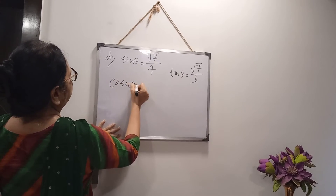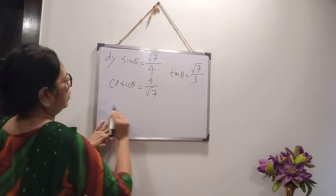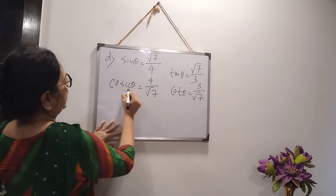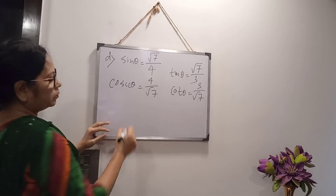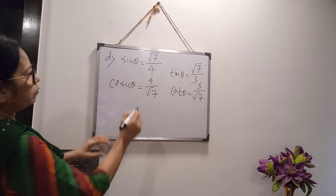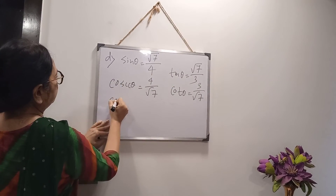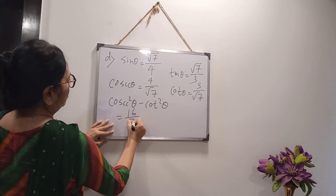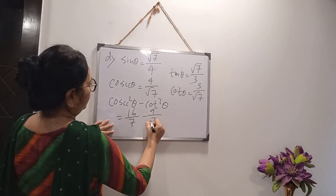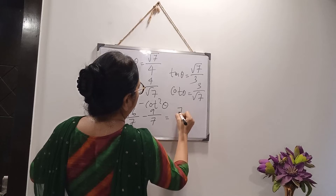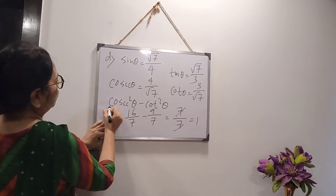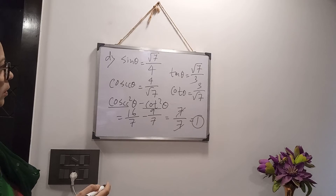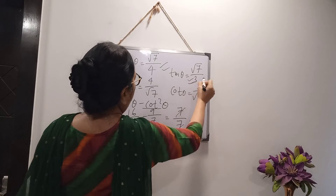Cosecθ = 4/√7, and cotθ is the inverse of tanθ = 3/√7. Now check cosec²θ - cot²θ: cosec²θ = 16/7, cot²θ = 9/7. So 16/7 - 9/7 = 7/7 = 1. The formula cosec²θ - cot²θ = 1 is satisfied. So it is possible to calculate the value of θ.